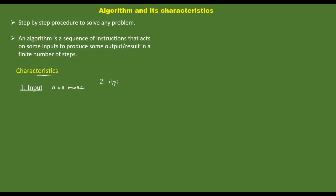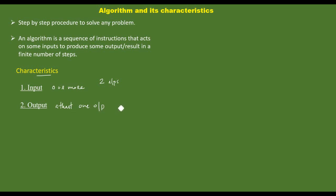Next characteristic: output. The algorithm must produce at least one output. The algorithm must have an aim or objective, and at least one output or an action will result.